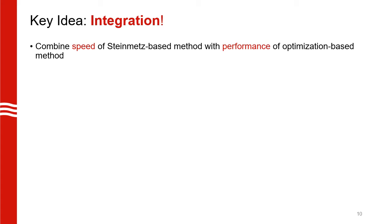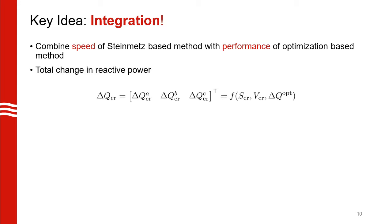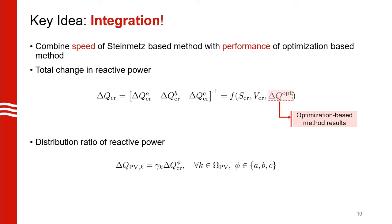The key idea is integration. More specifically, we want to use the solutions obtained periodically from the optimization-based method in order to improve the performance of the Steinmetz-based method. To do this, let's look at the two equations for the Steinmetz-based method. When we calculate delta QCR, we require the design parameter delta Q-hat. Instead of setting it to zero, which is its typical value, we are going to set it to the value calculated by the optimization-based method. For distributing delta QCR among downstream PV systems, instead of setting all the gamma_k's to the same value, we now use the optimization-based results to calculate the new gamma_k.